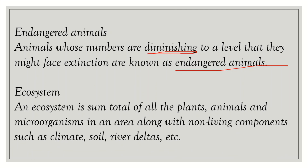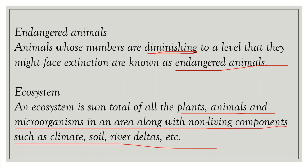Ecosystem. An ecosystem is the sum total of all the plants, animals and microorganisms in an area, along with non-living components such as climate, soil, river, deltas, etc.